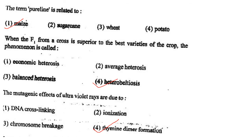Next one: The term pure line is related to option 1, maize; option 2, sugarcane; option 3, wheat; option 4, potato. Answer is option 1: maize.